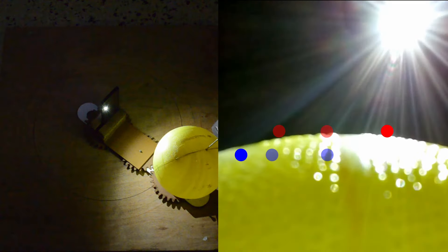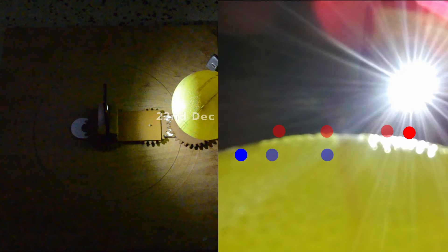The sunrise location continues its southward journey till 22nd December. Now, it is at its extreme position on the Southern side. Sunrise location will start its northward journey from this day. This is also known as Uttarayan.